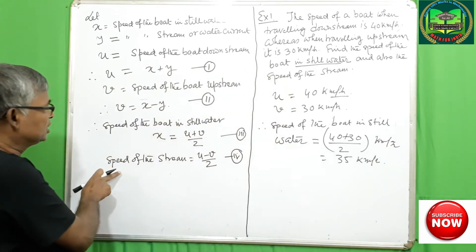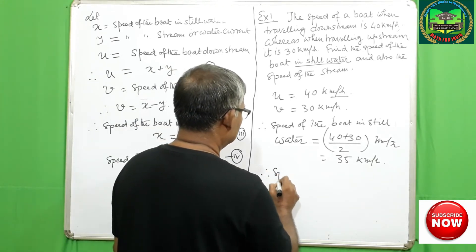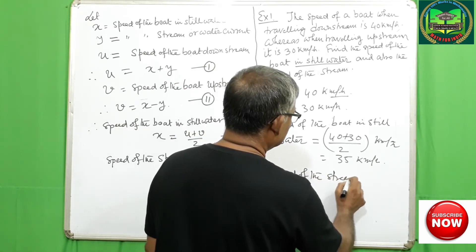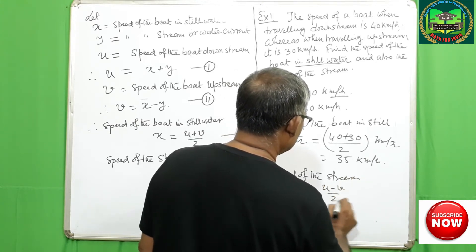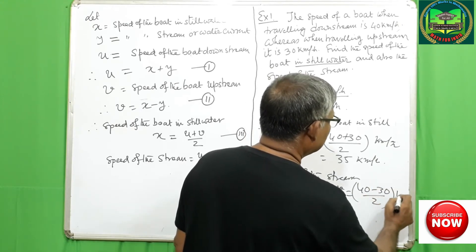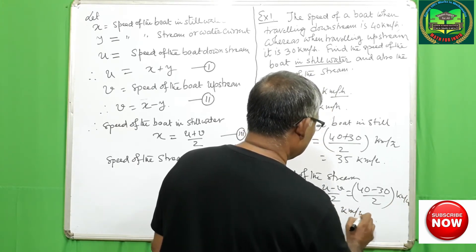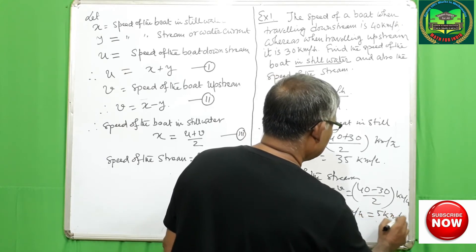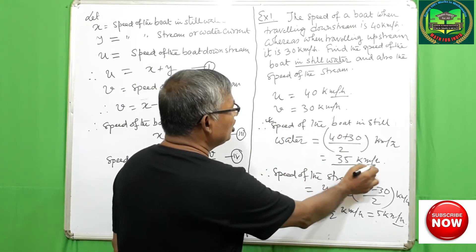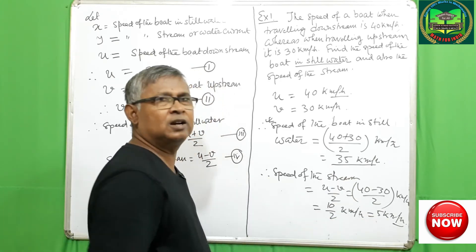And the speed of the stream equals U minus V by 2, that is 40 minus 30 by 2, which equals 10 by 2, that is 5 km per hour. So the speed of the boat in still water is 35 km per hour and the speed of the stream is 5 km per hour.